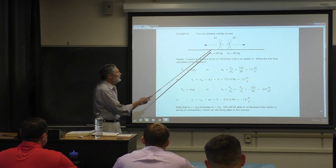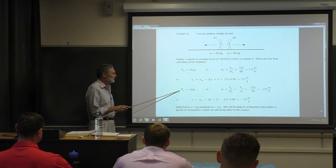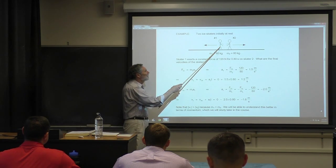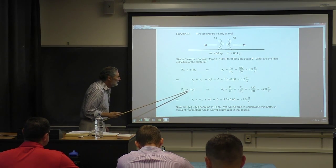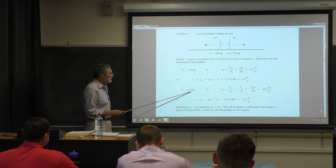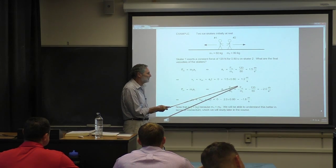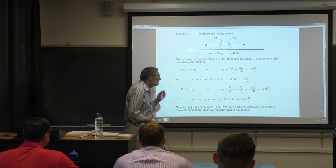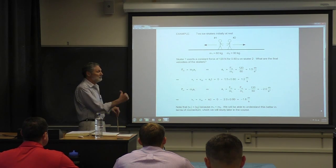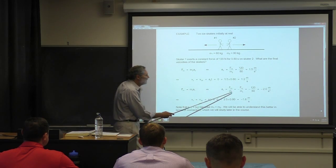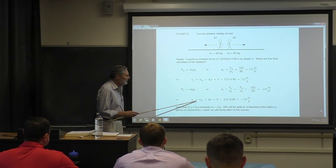Now let's look at the motion of person one. This person feels the force of two on one — 120 Newtons by Newton's Third Law, but in the opposite direction. I've explicitly put Newton's Third Law in: F₂₁ equals minus F₁₂. That's Newton's Third Law, and we know F₁₂ is 120 Newtons, so there's a force of minus 120 Newtons on person one. This gives us the acceleration in the negative direction, and again we get the final velocity with our kinematic equation.